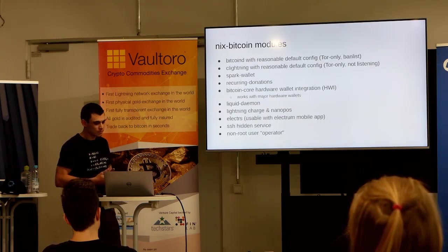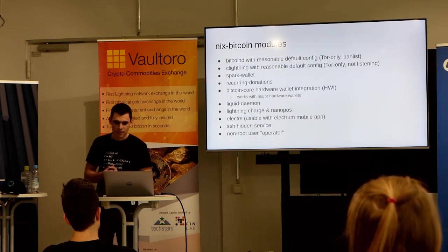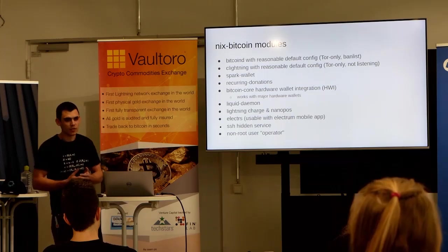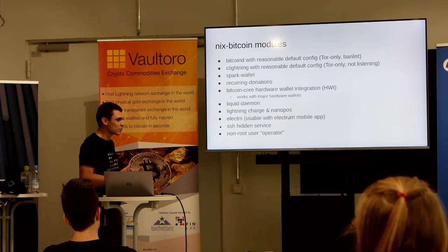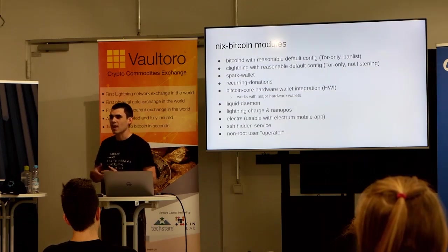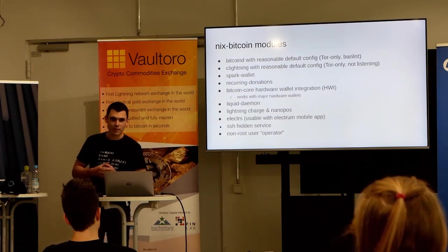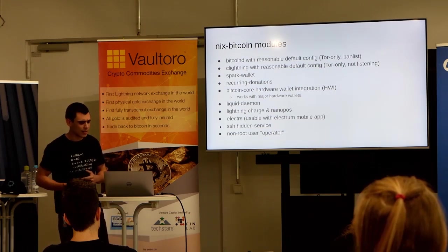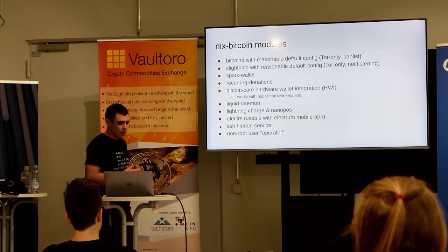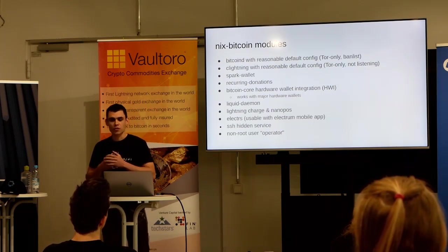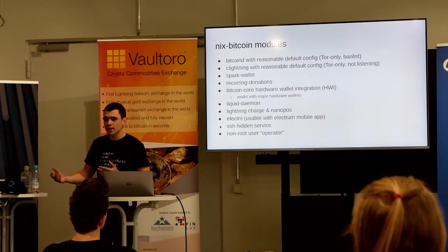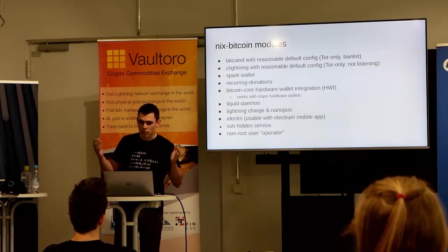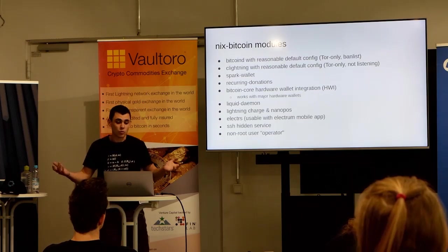There's a couple of modules right now. For example, there's BitcoinD — this is always active and has what I call a reasonable default config because it's Tor only, so it doesn't expose to anyone that you're using Bitcoin. It has a ban list that bans some known spy nodes and other sensible defaults. There's CLightning with a default config which is also Tor only — it's not listening, so it's easy to do if you want, but as a normal user who is not routing, you probably don't need this.